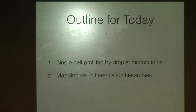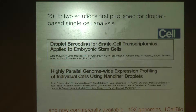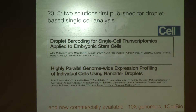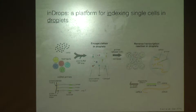The outline for today: I'll start by introducing the platform we're using in the Klein Lab — the inDrops platform. Then I'll talk about the tools we're building and the methodologies we're thinking of for mapping differentiation hierarchies. It's hard to believe that it was only last year that the droplet methods were first published. Before 2015, profiling thousands or tens of thousands of cells was simply prohibitively expensive — there was a whole class of questions that was really inaccessible to single-cell technology until these high-throughput methods came along. The method we use in our lab we call inDrops, for indexing single cells inside droplets.